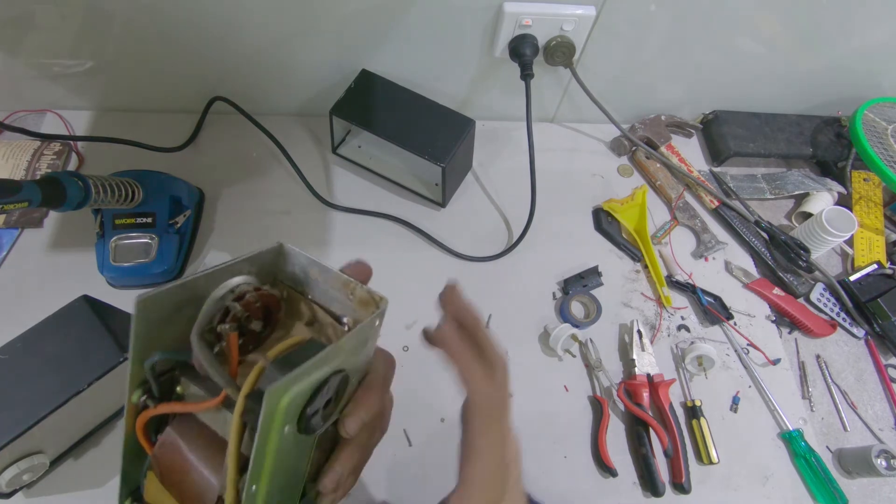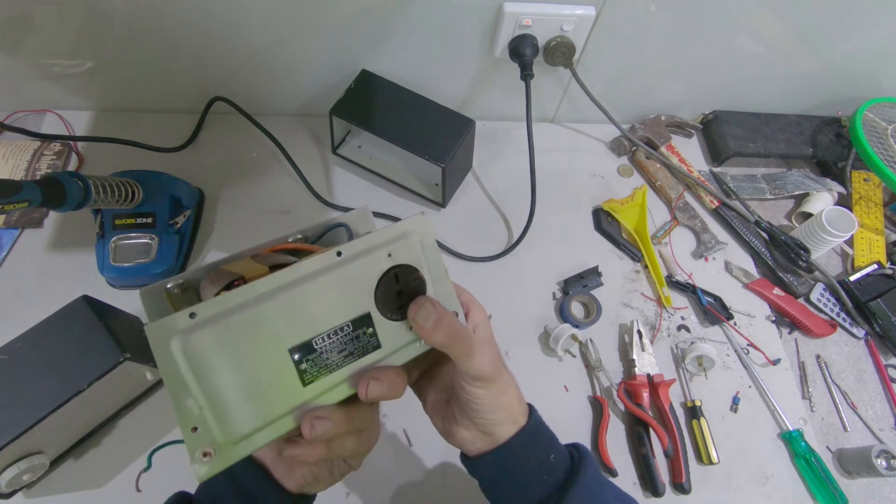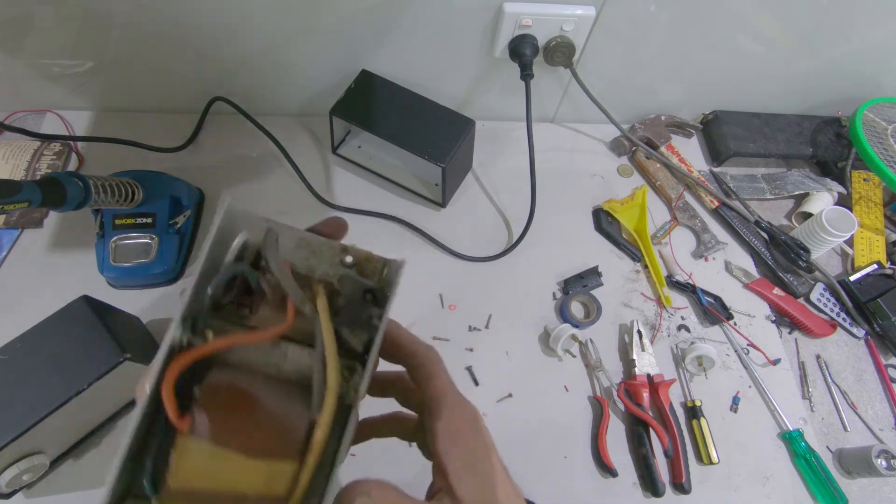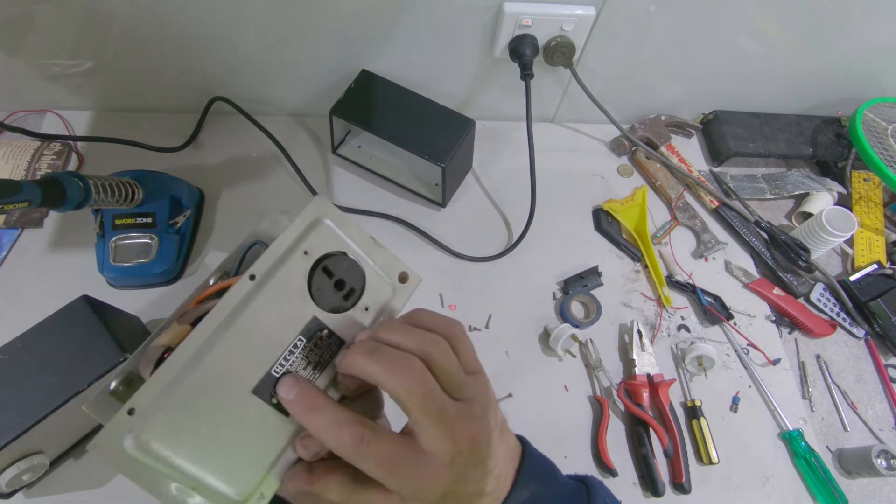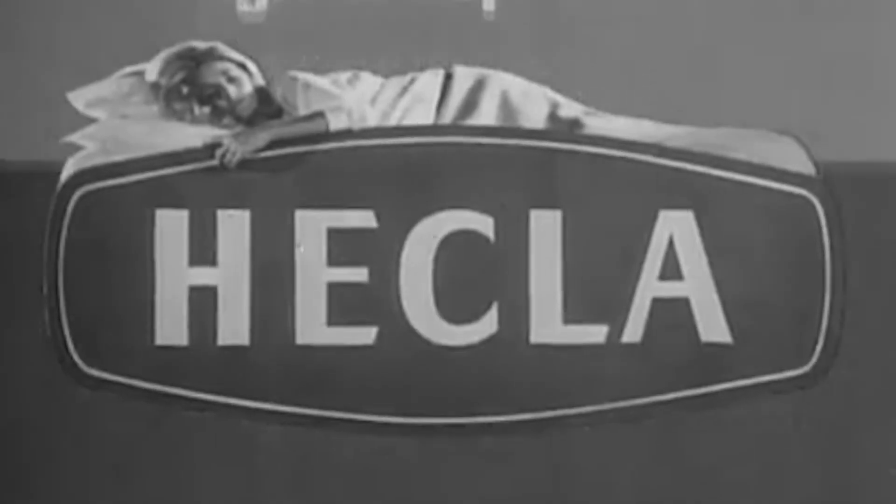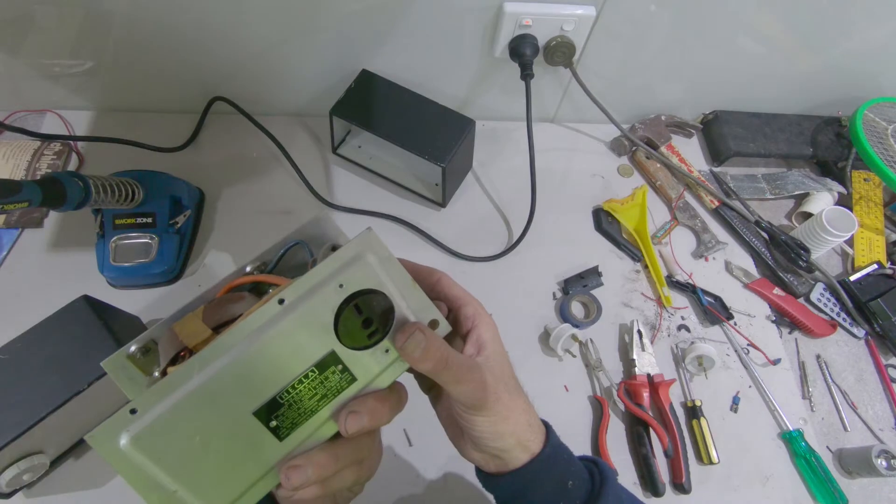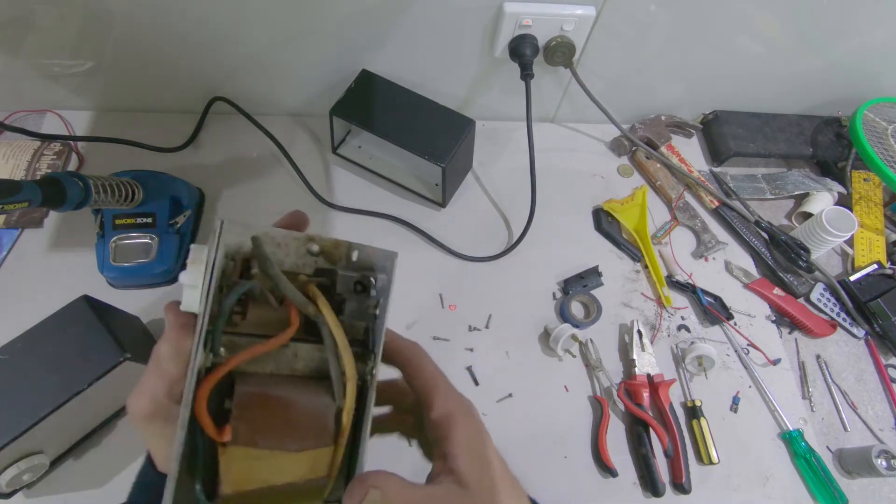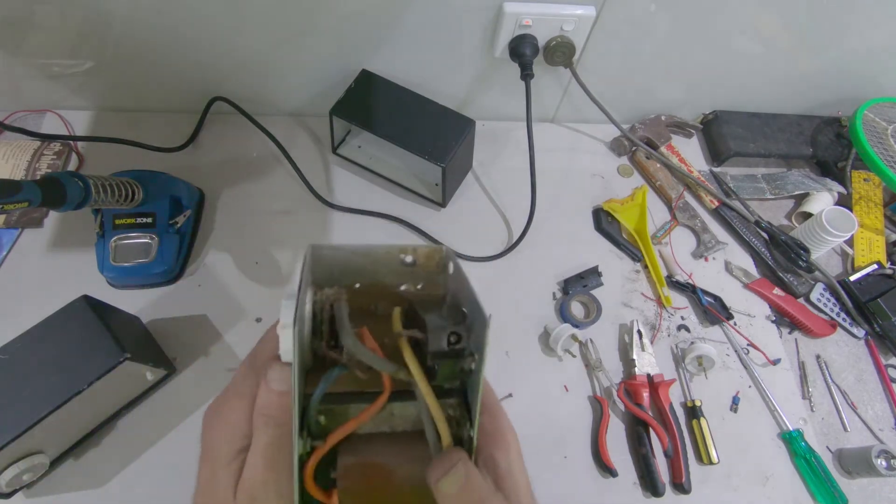Nice chunky transformer, 17 volts AC according to the label at the back. I've never heard of that brand, Helka. Reach the deep sleep zone faster, stay there longer on a Helka electric blanket, Australia. There you go, we used to make something in Australia once upon a time.